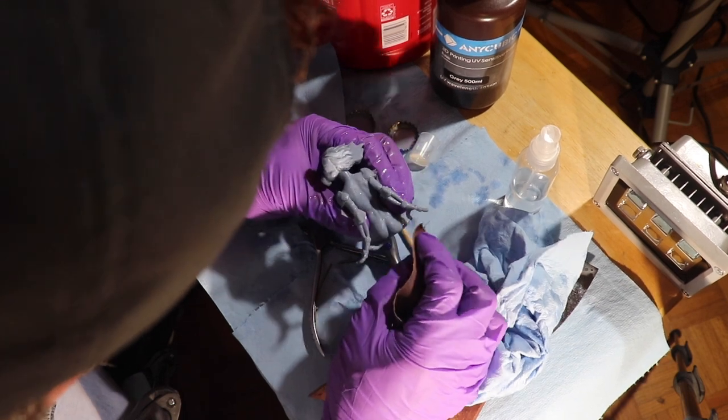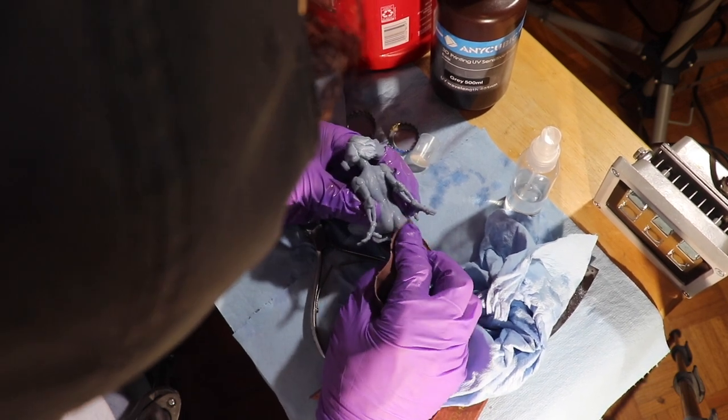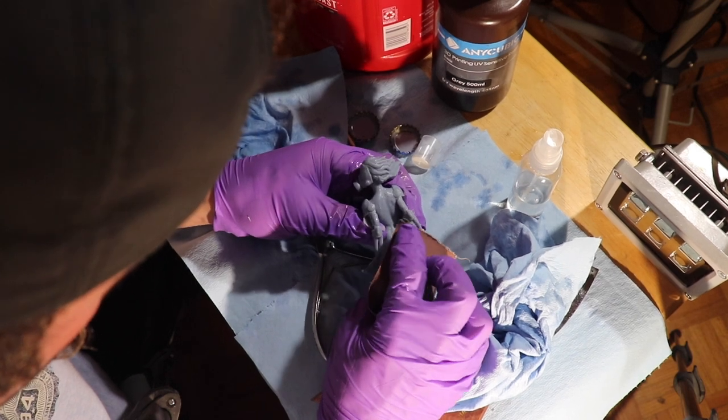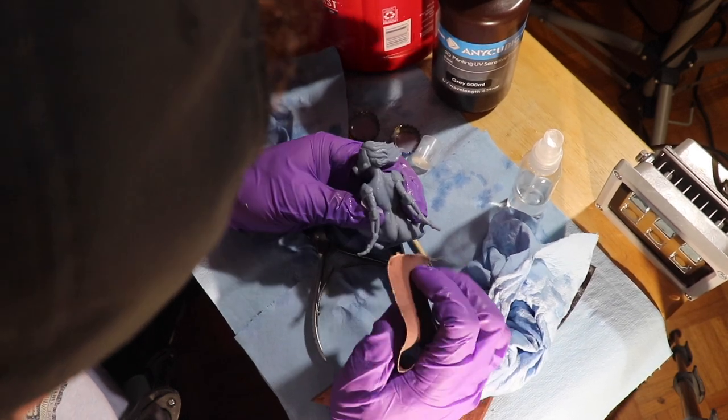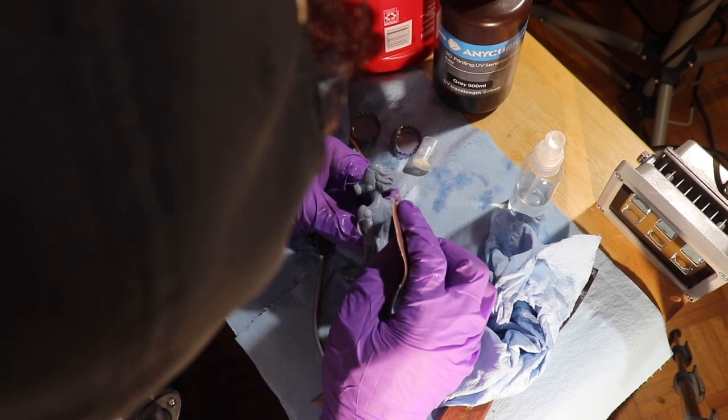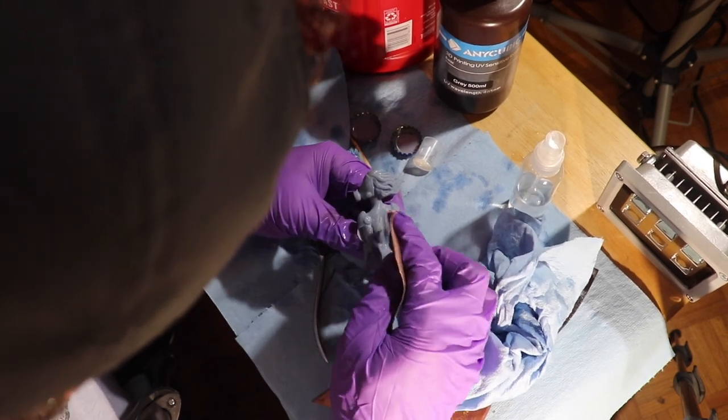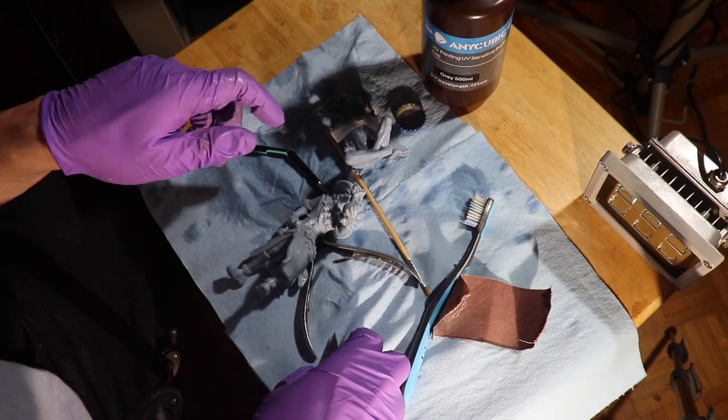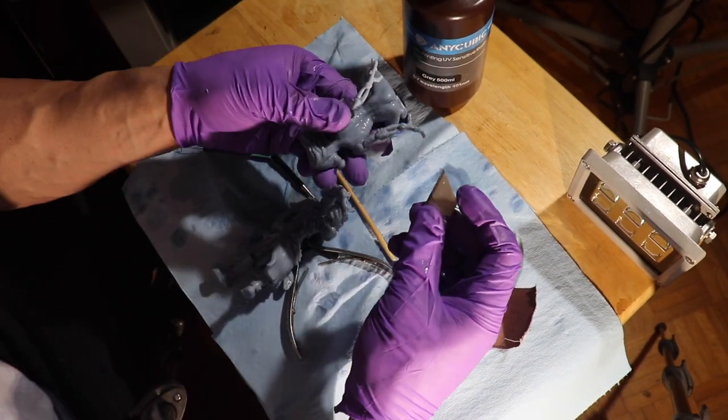Here I am taking sandpaper, basically knocking down any of the bumps and marks left by the supports. I'll do this softly, just enough to knock them down without losing any of the detail of the print.